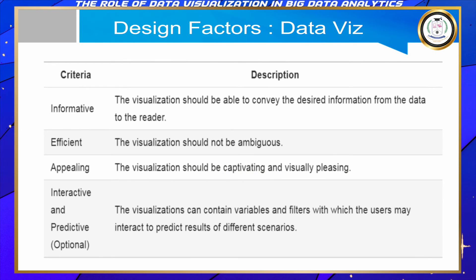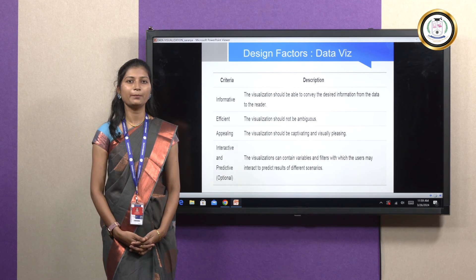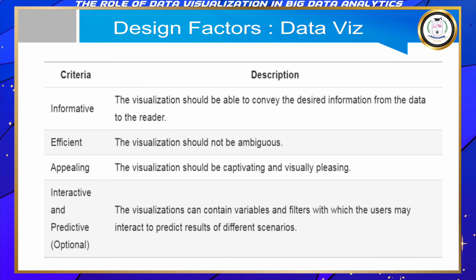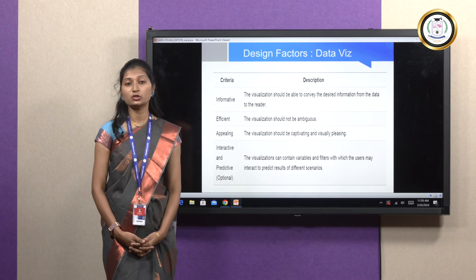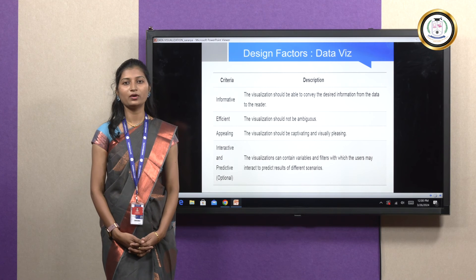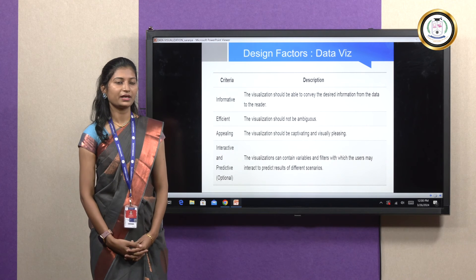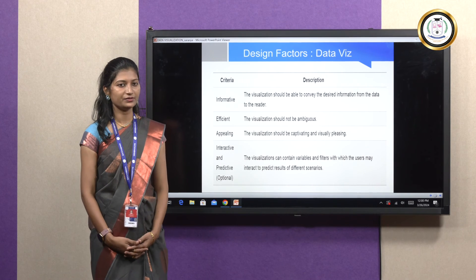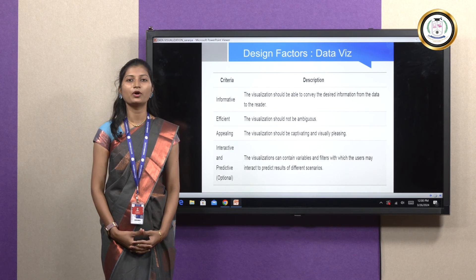When designing or converting information into graphical representation, we need to consider several key factors. The first is informative — whatever we present as a graphical representation should be very clear and efficient, with no ambiguity, and should not raise further questions when looking at the diagram. It should be adequate enough to provide all the inputs. The second is appealing — the look and feel of the graphical representation should be impressive and attractive to the target audience. Always, less is more attractive; presenting everything together in a single slide creates clutter, and we have to avoid that.